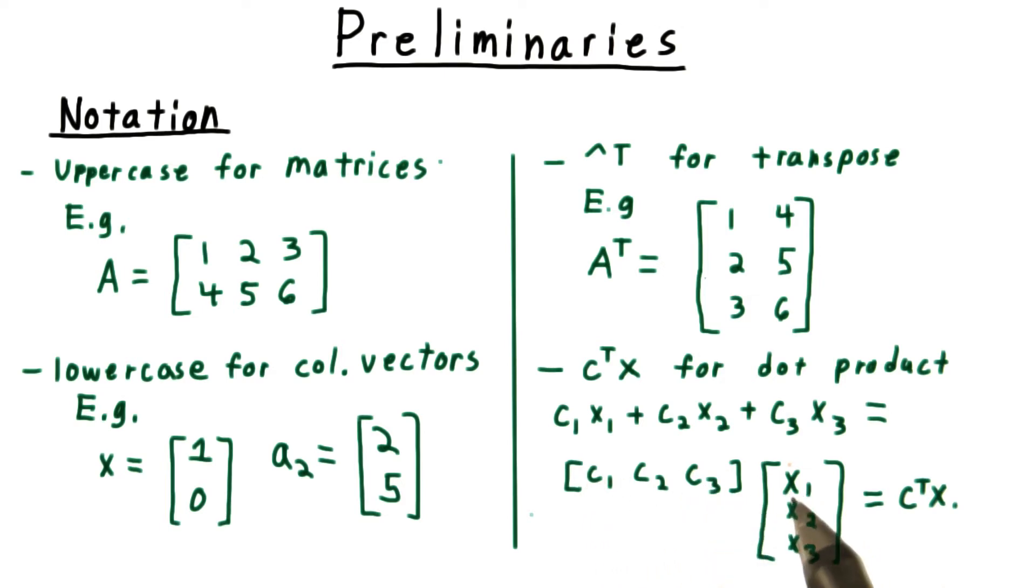This is a row vector times a column vector, which ends up just as a single entry matrix, which by convention we'll interpret as a scalar.